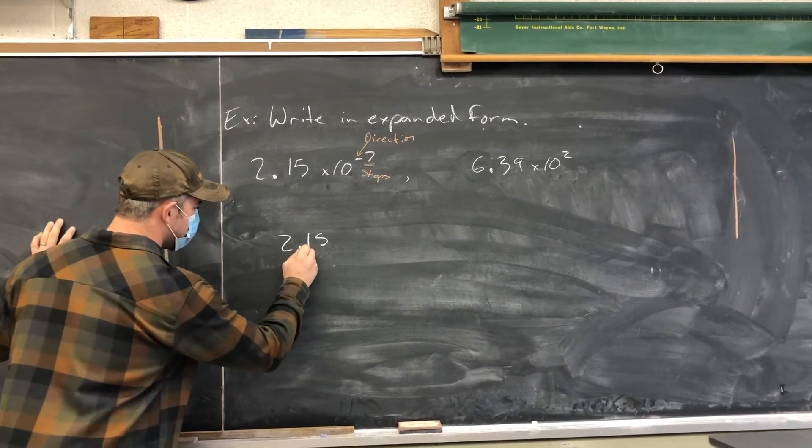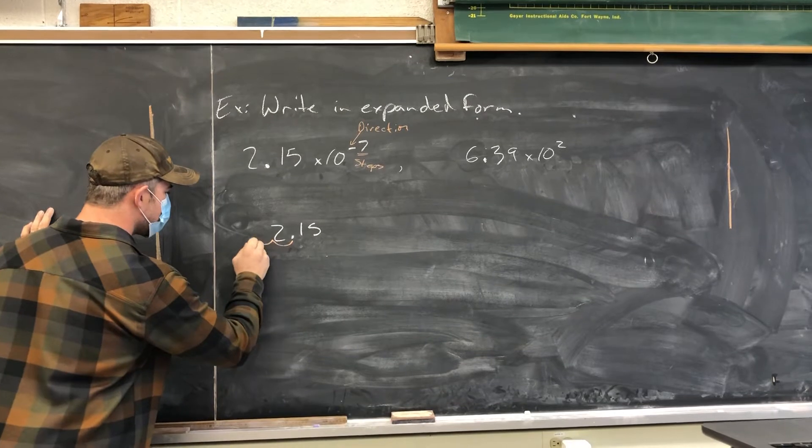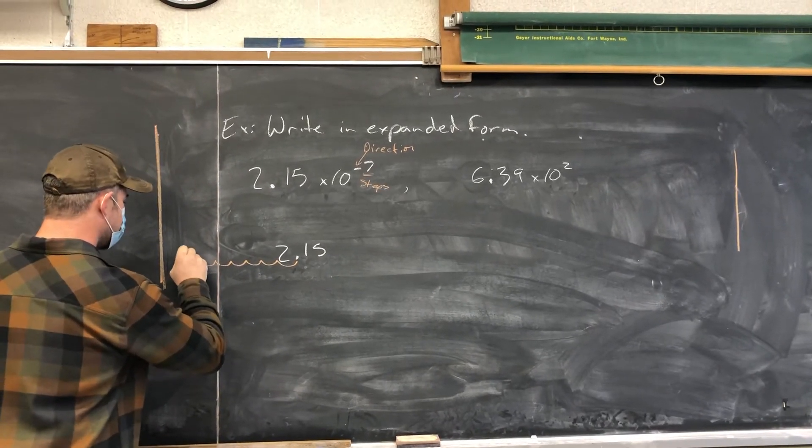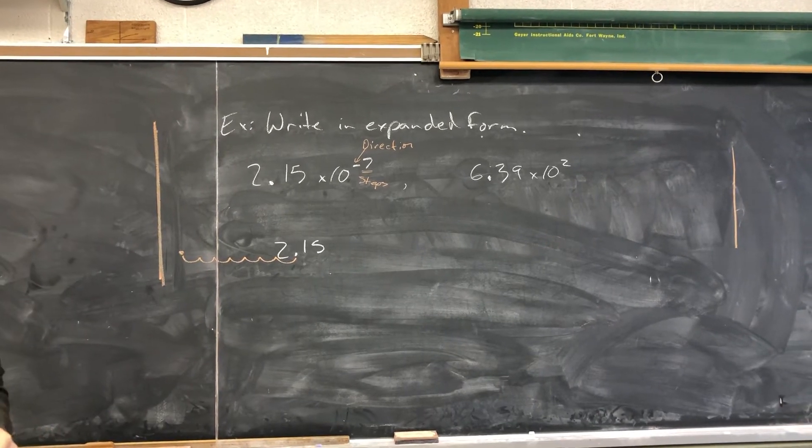So I'm going to move this decimal place one, two, three, four, five, six, seven places to the left, which is going to make a significantly smaller number.